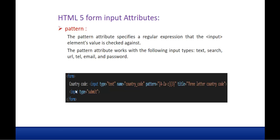Here we can observe a simple code example — a country code field where input type is text. The pattern is A-Z uppercase and a-z lowercase, with 3 in curly braces. So this input type text is going to take only 3 characters, and the 3 characters should be uppercase A-Z or lowercase a-z values. Apart from that, it is not going to take anything. This is what the pattern attribute does.